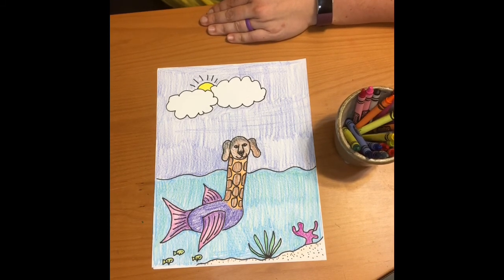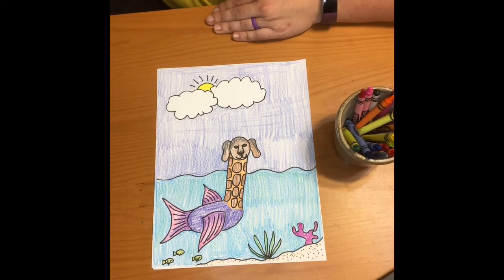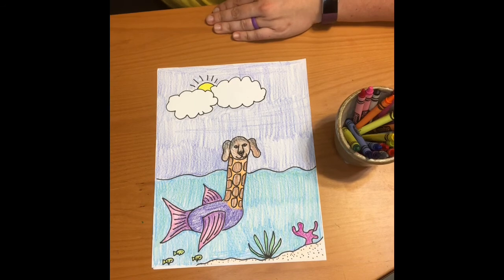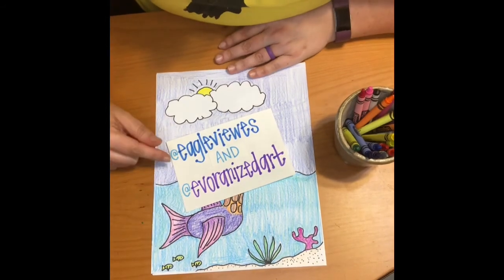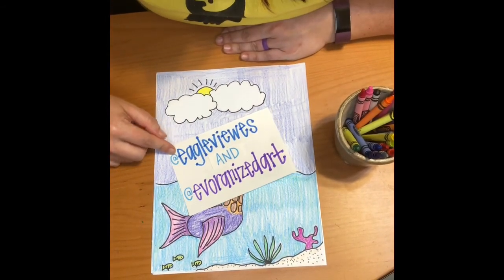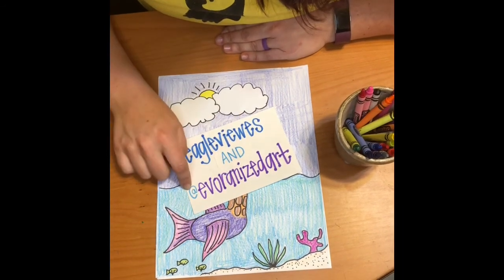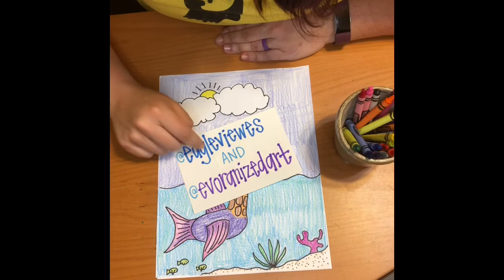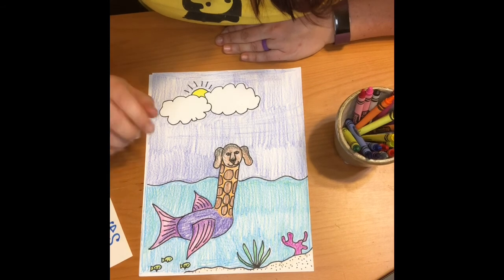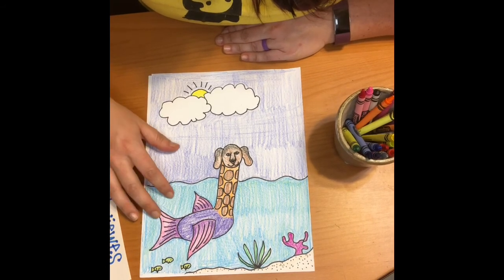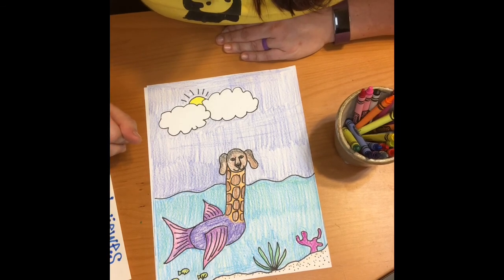If you need ideas for what animals look like, remember you could search Google or look for animal pictures. And then when you are finished, please take a couple minutes and post this on Twitter. Or you could even email me. You could do eagleviewes at Twitter or evorganizedart at Twitter to tag me so I can see them. Or you could email me at evsmith4 at fcps.edu. I hope you guys are having great fun at home working on your art.